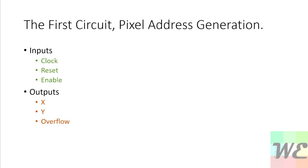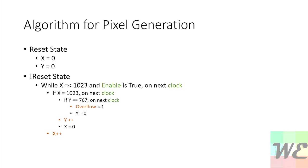Our circuit is going to need three inputs and three outputs. The inputs are going to be clock, reset, and enable, and the outputs are going to be the x and y values along with the overflow. This is our pixel address generation circuit. When we're in the reset state — when the clear input is high — we force x equals 0 and y equals 0.